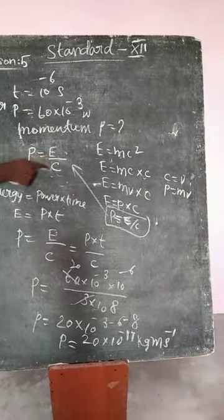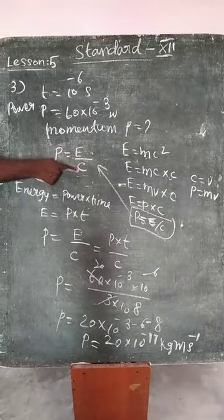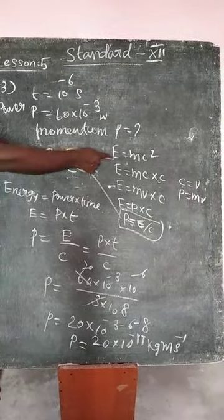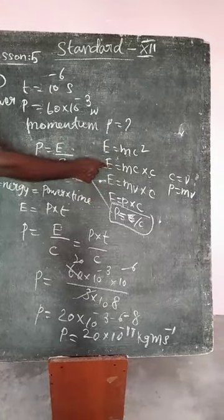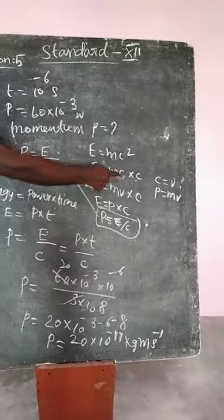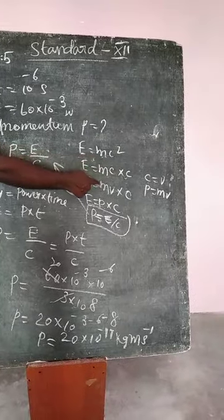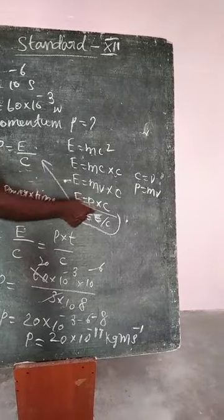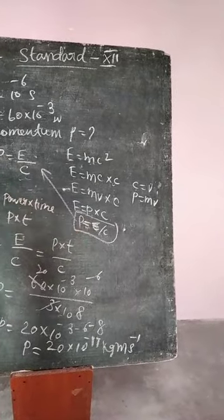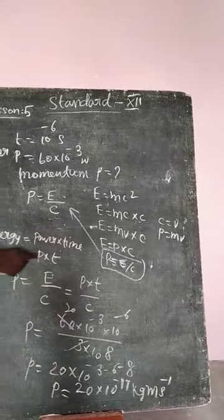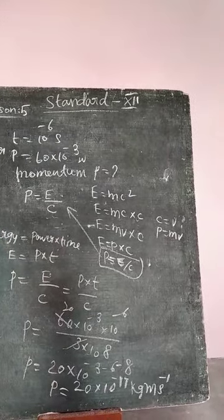Momentum P equals E by C, energy by speed of light. According to Einstein's mass-energy equivalence, E equals mc square, which is E equals mc into c. M into V is momentum, so E equals P into C. Therefore P equals E by C. Energy E equals power into time, E equals P into T.